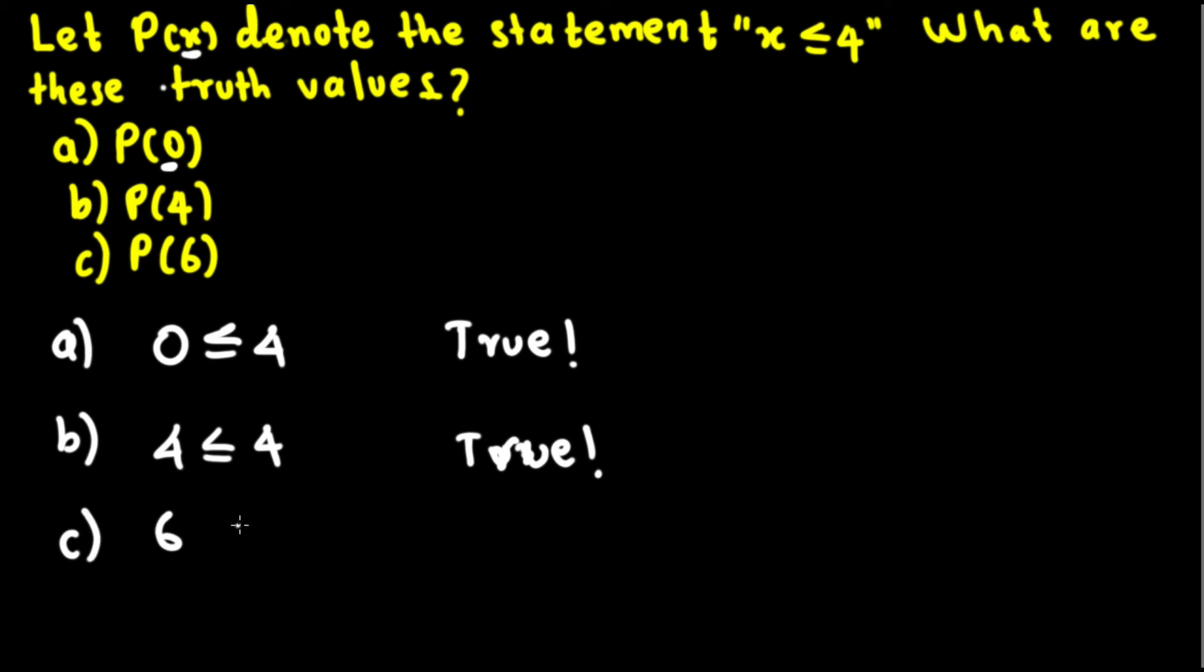Now let's look at the third one. Third one is: 6 is less than or equal to 4. This is not true, so this is false. And that's how we do that.